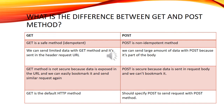GET method is not secure because data is exposed in the URL and we can easily bookmark it and send a similar request again. POST is secure because data is sent in the request body and we cannot bookmark it. GET is the default HTTP method; you must specify POST to send a request with the POST method.